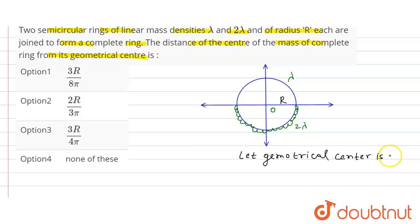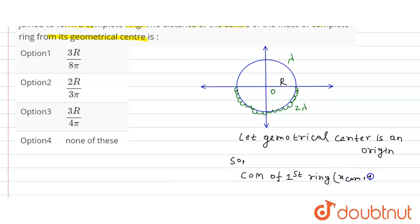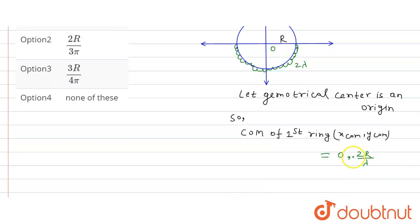Let the geometrical center be at the origin. So the center of mass of the first ring: x_cm = 0, and y_cm = 2r/π. Here the radius is R, so the numerator is 2R, and the mass is lambda times pi R (since lambda is the linear mass density). So center of mass of first ring is (0, 2R/π).